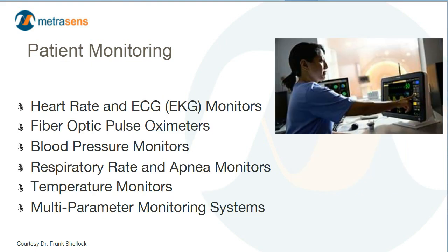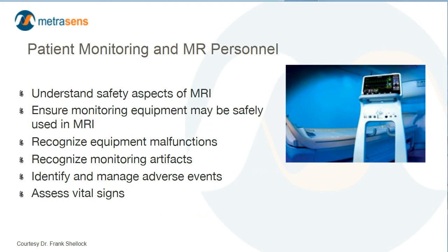MR conditional physiological monitoring equipment can include heart rate or EKG monitors, fiber optic pulse oximeters, blood pressure monitors, respiratory rate and apnea monitors, temperature monitors, and multi-parameter monitoring systems. With regards to monitoring patients in MRI, MR Level 2 personnel should understand safety aspects of MRI, ensure monitoring equipment may be safely used in MRI, recognize equipment malfunctions, recognize monitoring artifacts, identify and manage adverse events, and assess vital signs.